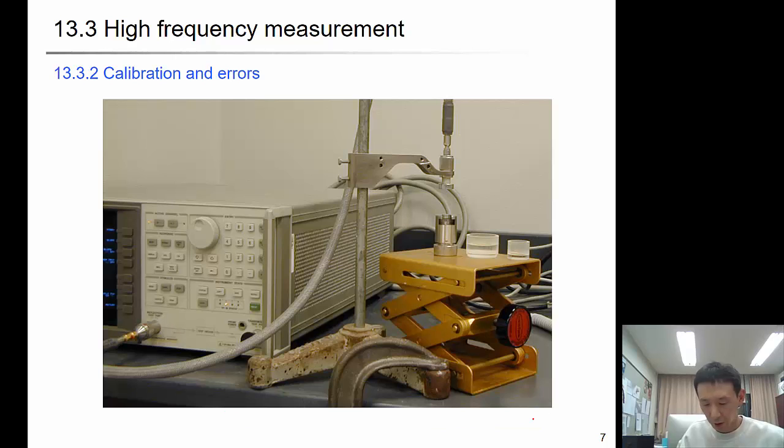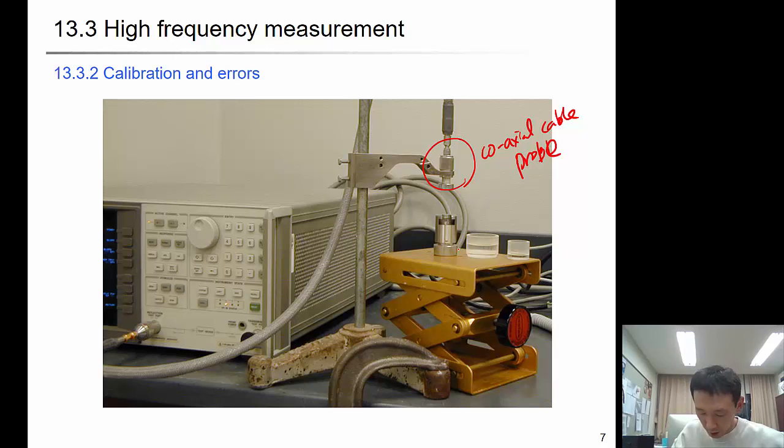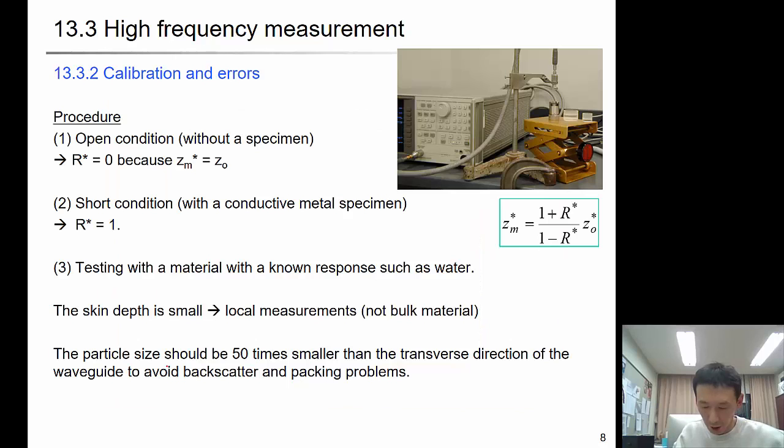So this is how it looks like. This is the coaxial cable probe, and this is the waveguide. You can put the liquid inside. And you can download the data from the equipment. Open circuit condition, the reflection coefficient is 0, so Zm* is infinity. Short circuit condition, R* is 1 with conducting material. You can calibrate testing with a material with a known response such as water.